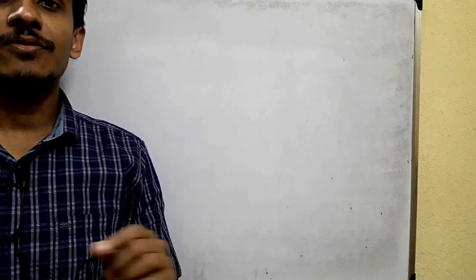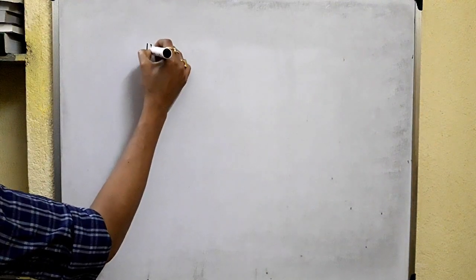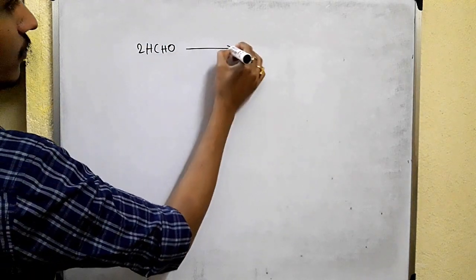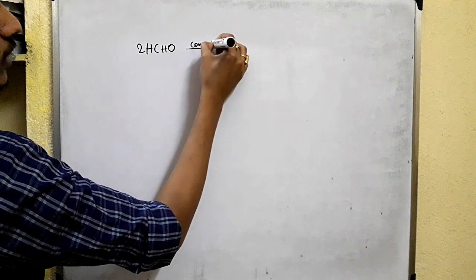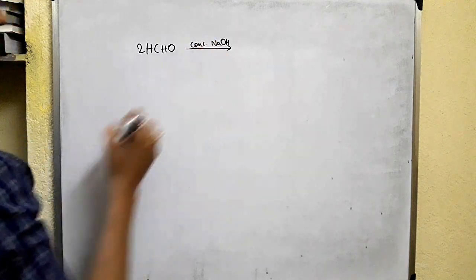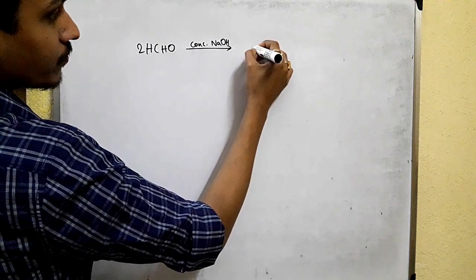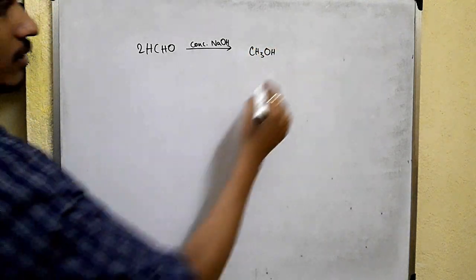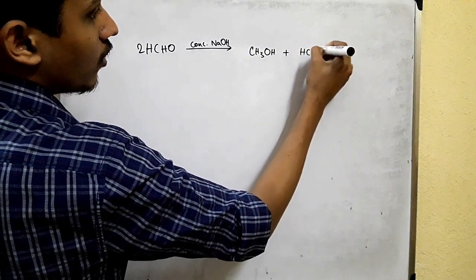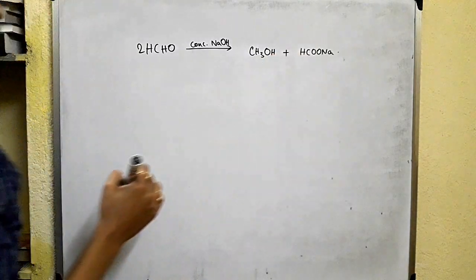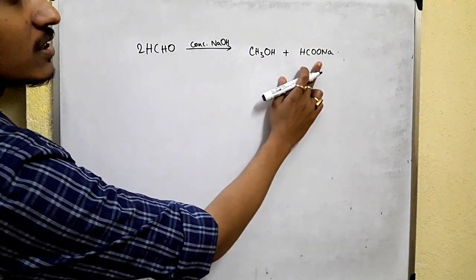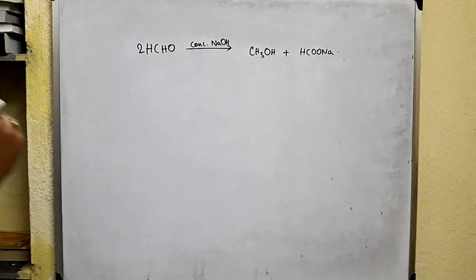If you take formaldehyde — two molecules — in the presence of concentrated NaOH, a mixture of an alcohol and the salt of a carboxylic acid is formed. So this is methanol and this is sodium formate.